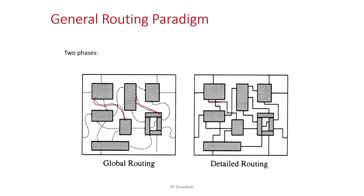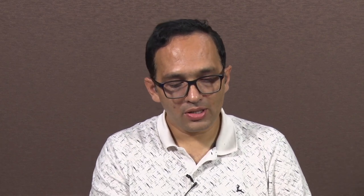Once global routing decides paths, detailed routing determines the exact connections. If two wires need to pass through the same area, they must be on different tracks and not in the same line. Think of it as vertical and horizontal layers — vertical connections go one way and horizontal connections another, so there is no overlap. In a horizontal plane, two wires in the same row must be placed in different rows if they overlap.